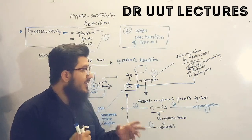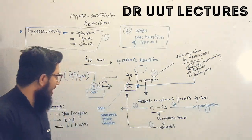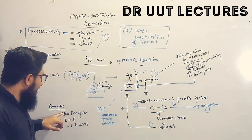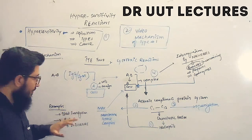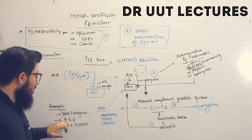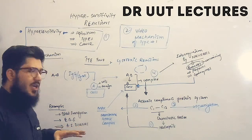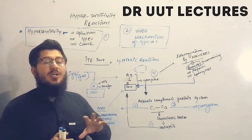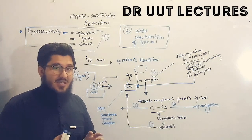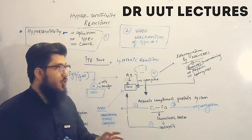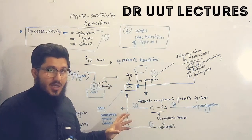The examples of these type two reactions include: number one, blood transfusion reactions; number two, erythroblastosis fetalis; and number three, many autoimmune diseases, which are actually due to the type two reactions.